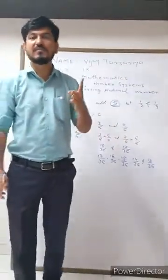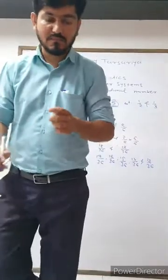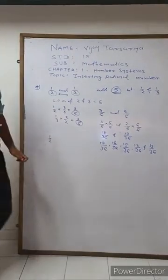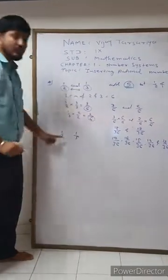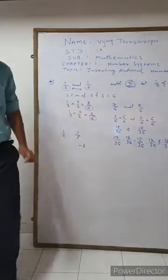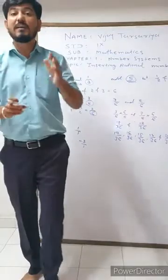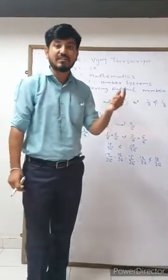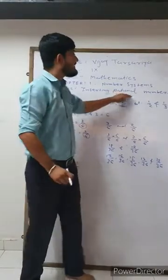So we discussed the different types of numbers: natural numbers, whole numbers, integers, fractions, and rational numbers. Some numbers are only integers, some are only whole numbers. For example, one by two is a fraction and also a rational number. Minus three is an integer and also a rational number because we can write it as minus three by one. All natural numbers, integers, and fractions are also rational numbers.